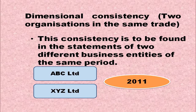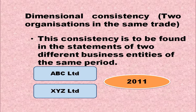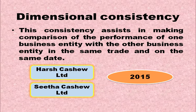Dimensional consistency is found in the statements of two different business entities for the same period — for example, ABC Limited and XYZ Limited. These two enterprises are compared using the same methods, which helps in comparing their performance in one particular year, say 2011. Dimensional consistency assists in making comparisons between one business entity and another in the same trade on the same date.